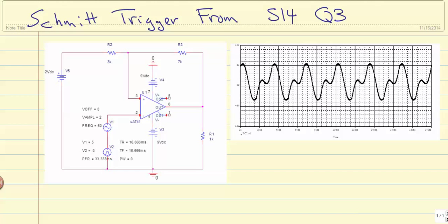In this example, we want to look at the Schmidt trigger problem from quiz 3 in the spring of 2014. This is the Schmidt trigger configured using a 741 op amp.